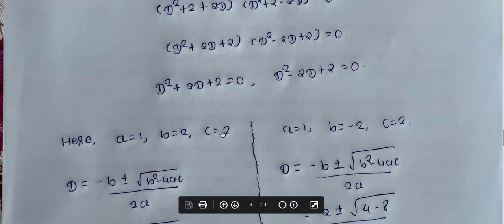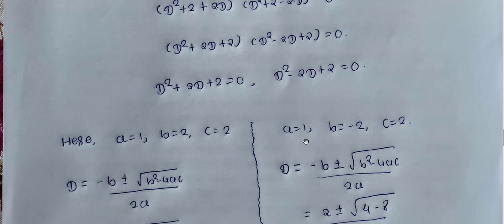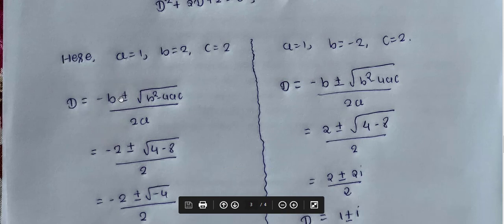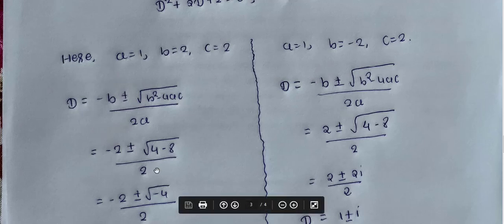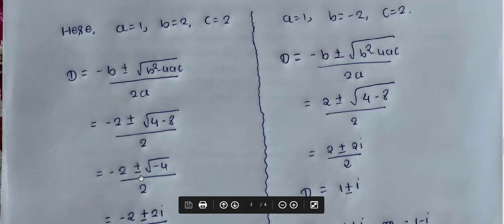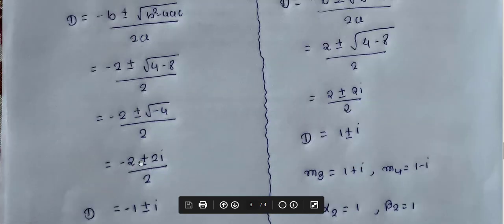For d² + 2d + 2 = 0, using the quadratic formula with a=1, b=2, c=2: d = (-b ± √(b²-4ac)) / 2a = (-2 ± √(4-8)) / 2 = (-2 ± √(-4)) / 2 = (-2 ± 2i) / 2 = -1 ± i.